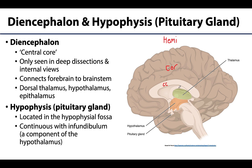Looking closer into this region, you are looking at the diencephalon, often described as the central core of the brain. It is not visible at all from the external view — you have to be looking at this hemisected view or even deeper dissections. It consists of the dorsal thalamus, the hypothalamus, and the epithalamus, which is the posterior element of the diencephalon. You can see a little bit of the pineal gland here, which is a component of it. These are deeper structures; you will not have to identify them in anatomy lab.